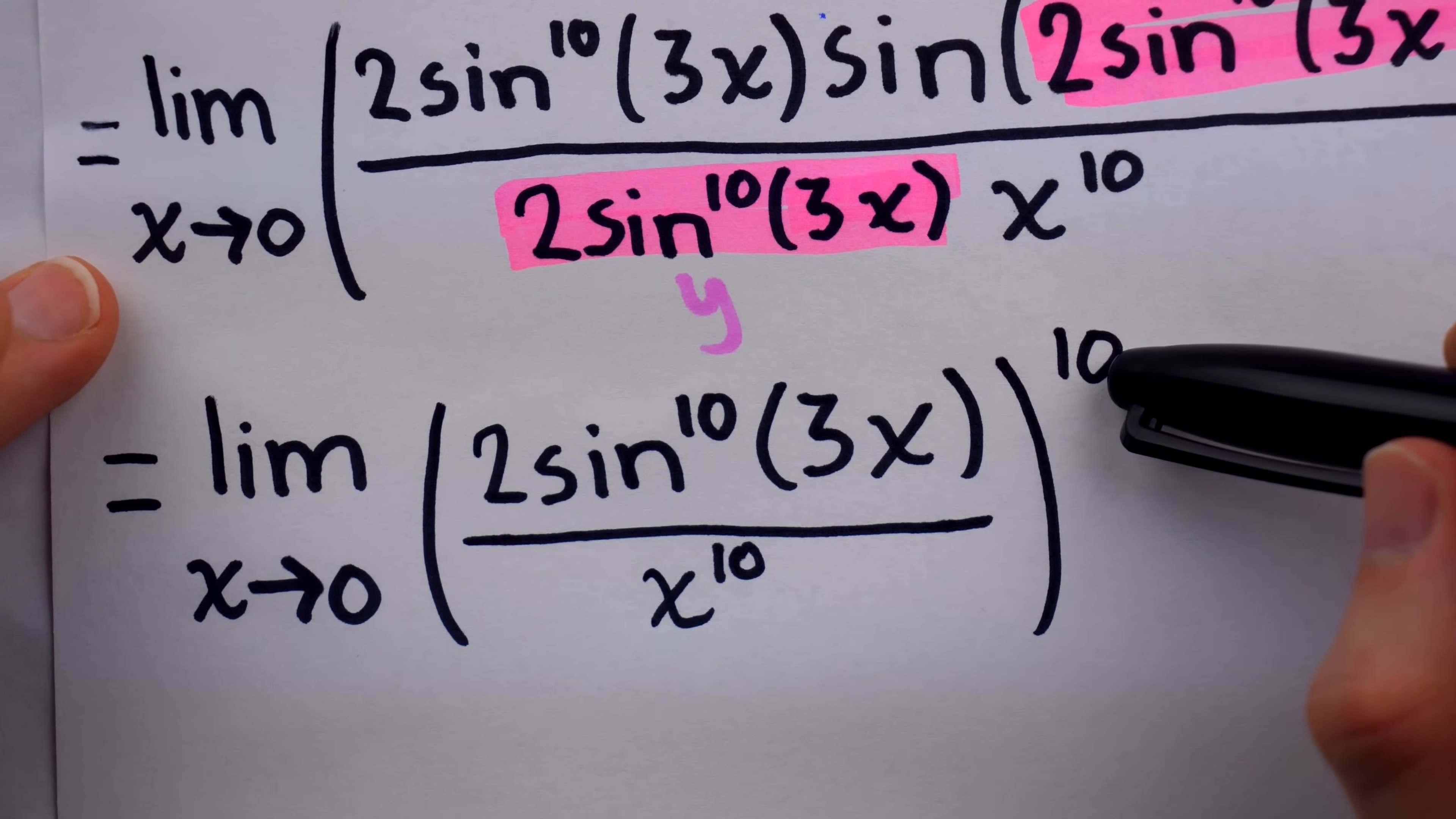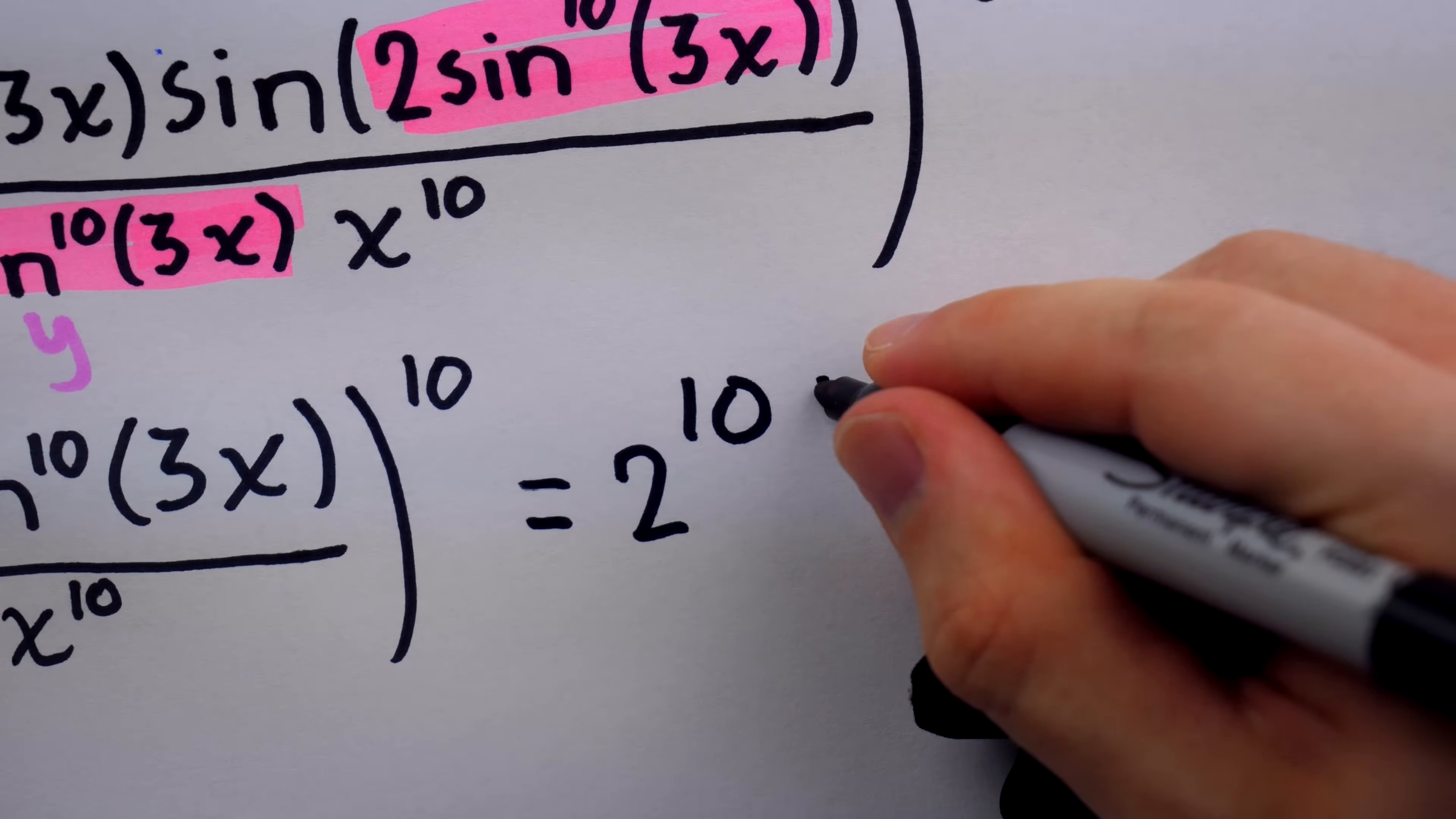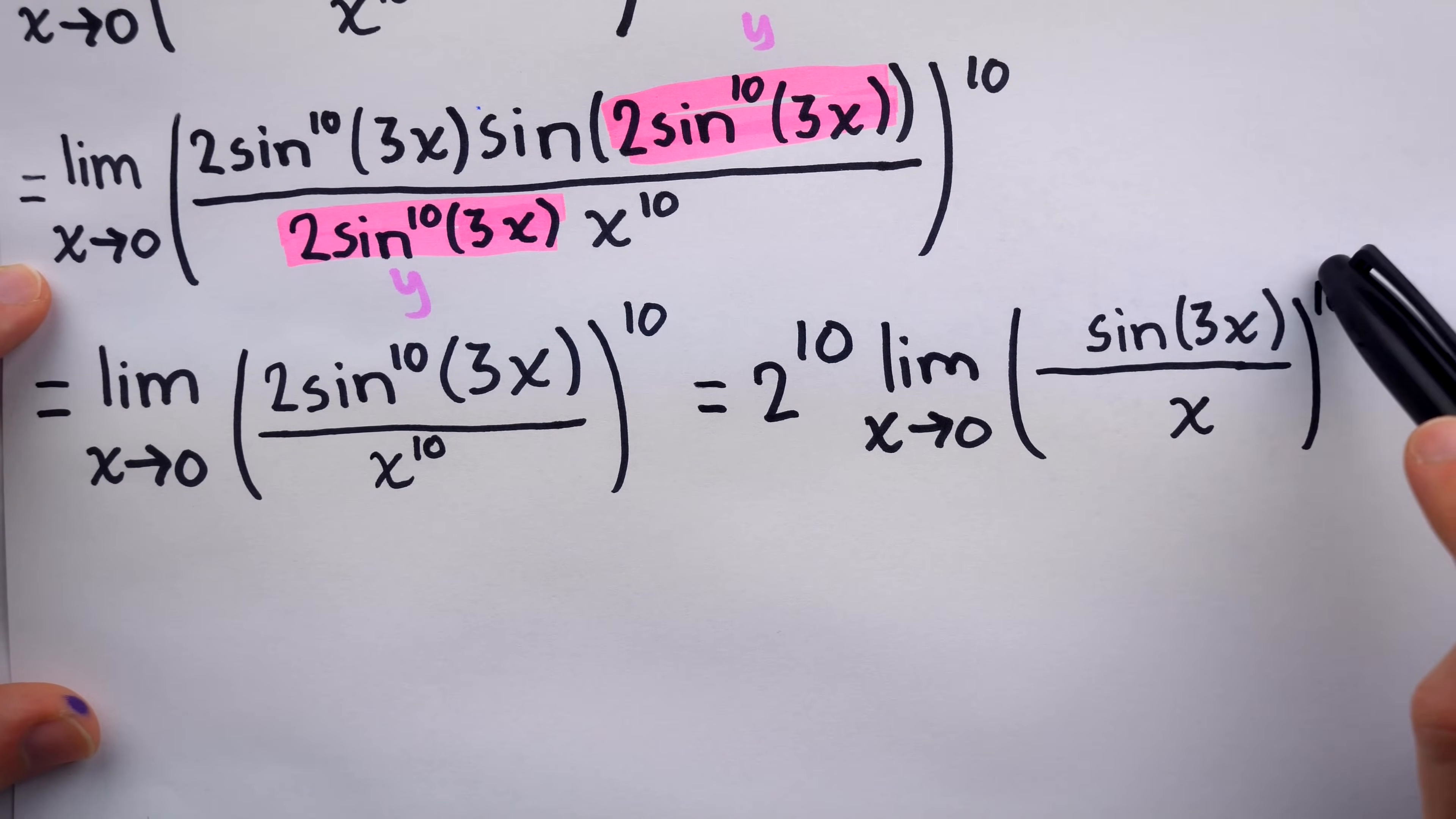There's an obvious thing to do now, which is to take 2 to the power of 10 out of the limit. That's just a constant factor, so we can just slide that out. And then, take this exponent of 10 that's common to sine and x, take that out, and it'll be an exponent of 100. So we're bringing 2 to the 10 outside of the limit. So we have 2 to the 10 times the limit, as x approaches 0, of sine of 3x over x, all to the power now of 100. And again, that's because we took that common exponent of 10 out. So now we'd have 10 times 10, or 100.